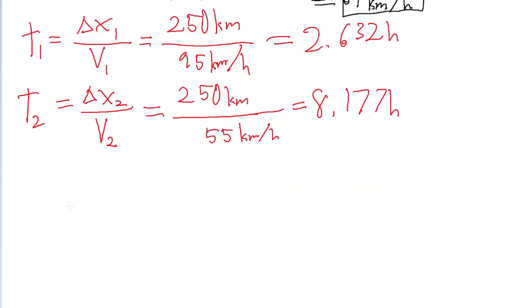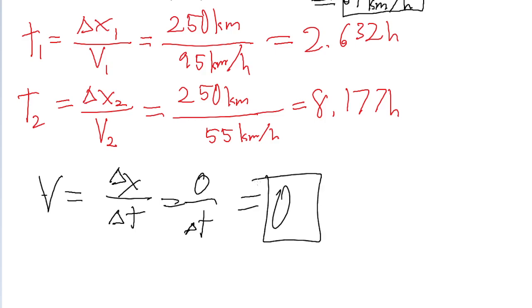So even if we were to use the velocity formula of displacement divided by time, there is no displacement. The displacement is zero. So the velocity is zero, because the displacement is zero.